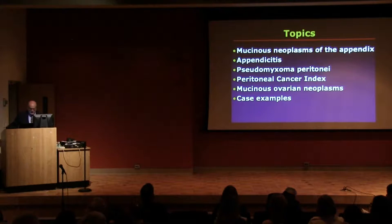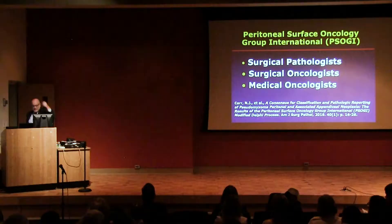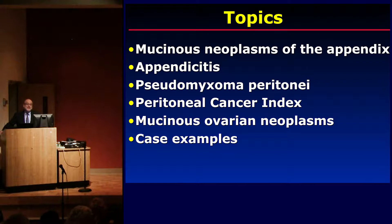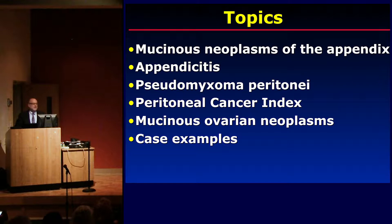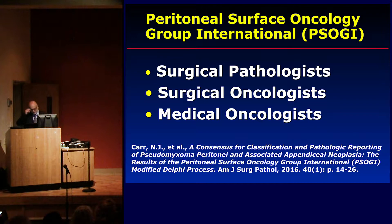In the next 20 minutes, here are the six topics I'll be talking about. Mucinous neoplasms of the appendix — it's important to talk about appendicitis because a lot of patients don't come to the emergency room with signs saying they have a mucinous neoplasm of the appendix. Sometimes it's signs and symptoms of appendicitis. We'll talk about pseudomyxoma peritonei, review the peritoneal cancer index, mucinous ovarian neoplasms, and — to quote Shakespeare's Othello, Act 3 Scene 3 — 'Show me the ocular proof.' I'll show you some case examples.